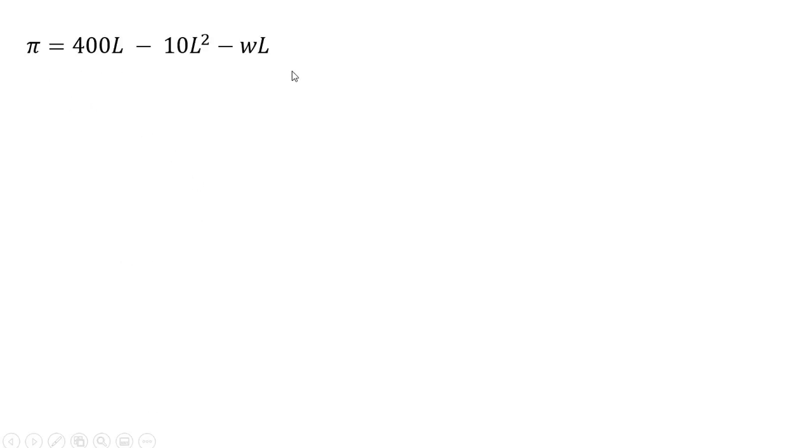So simplifying our profit function a little bit and now taking a derivative of it with respect to L. We get that the following result. We're maximizing so we're going to set it equal to zero.